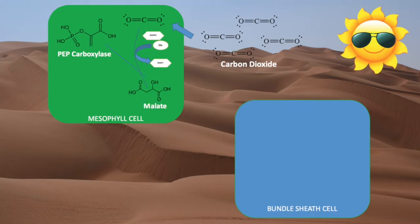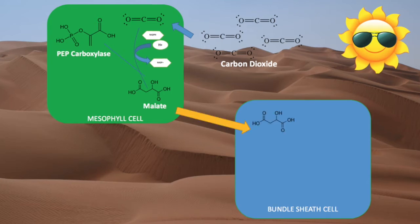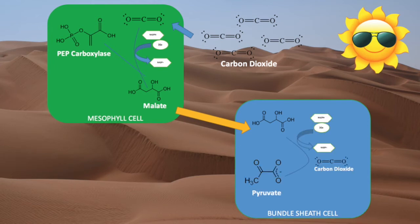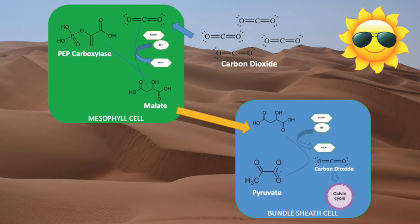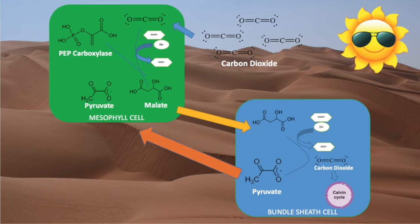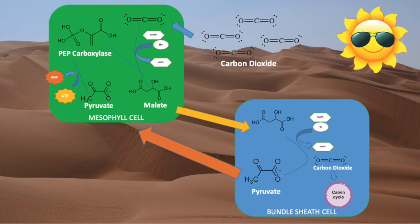After carbon fixation, an intermediate compound called oxaloacetate is turned into a four-carbon compound called malate. Malate is then released from the mesophyll cells and sent to the bundle sheath cells. Once malate enters the bundle sheath, it is broken down into CO2 and pyruvate. The CO2 enters the Calvin cycle, while the pyruvate returns to the mesophyll cells, where itself and a phosphate from ATP is used to regenerate PEP carboxylase.